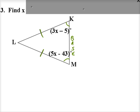And so since base angles are congruent, I know that those angles must equal each other. 3x minus 5 must equal 5x minus 43.